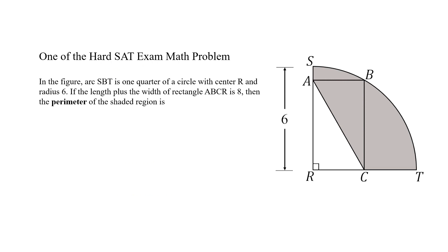The question is: in the figure, arc SBT is one quarter of a circle with center R and radius 6. If the length plus the width of the rectangle ABCR is 8, then the perimeter of the shaded region is.